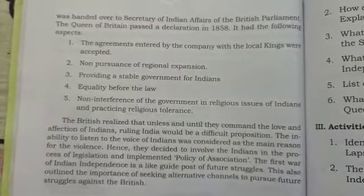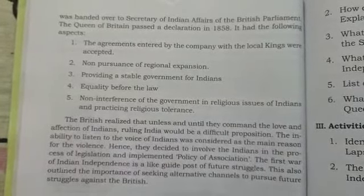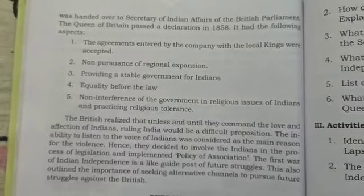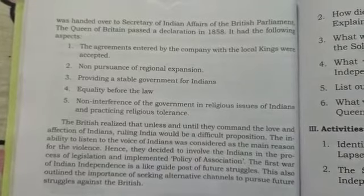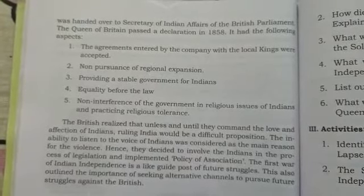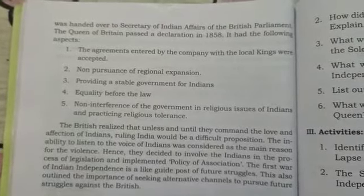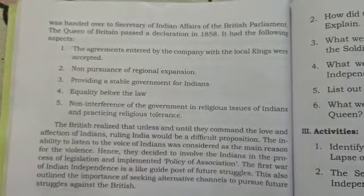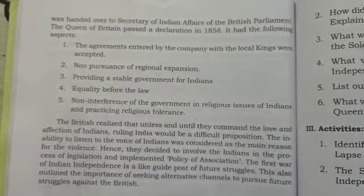The British realized that unless they commanded the love and affection of Indians, ruling India would be very difficult. They acknowledged that the inability to listen to the voice of Indians was a main reason for the violence. Hence they decided to involve Indians in the process of legislation and implemented the policy of association. The First War of Indian Independence also served as a guide for future struggles and outlined the importance of seeking alternative channels for future struggles against the British.